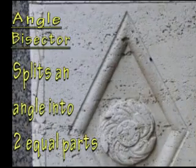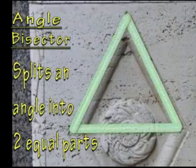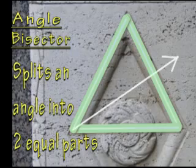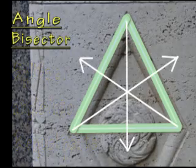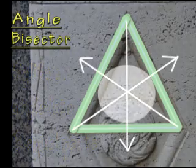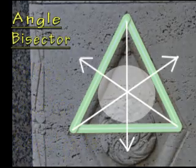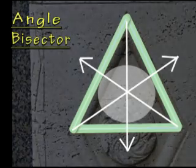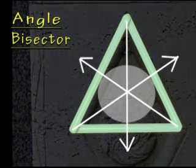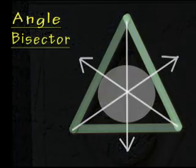Each internal angle in this triangle can be split into two equal parts by making an angle bisector. All three angle bisectors will meet at one point, which would allow us to create a circle that would fit just inside the triangle.